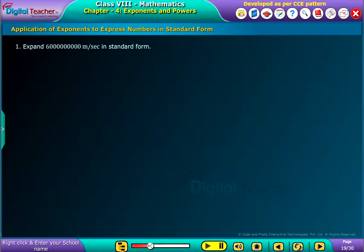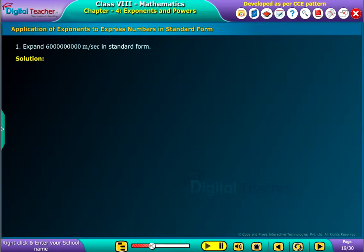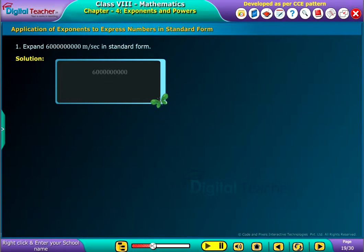Expand the number shown on the screen in standard form. The solution is as follows. The given number is equivalent to 6 into 100 crores, in which this number is equivalent to 10 power 9, or it can also be expressed as shown on screen.